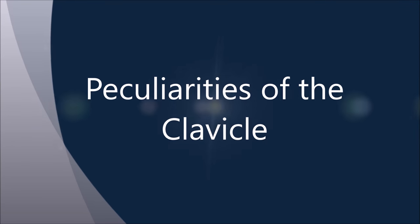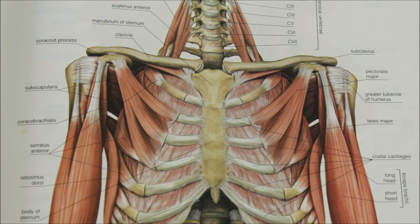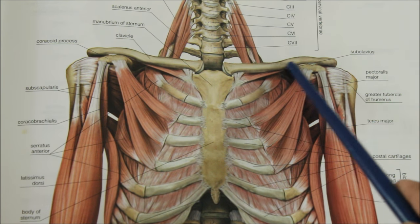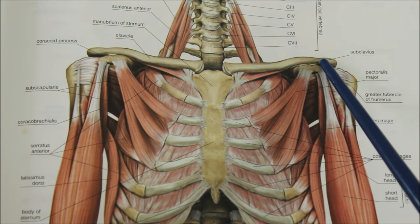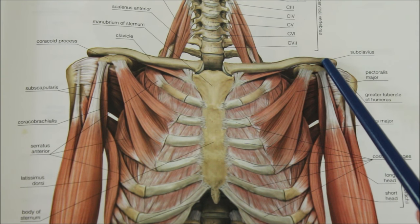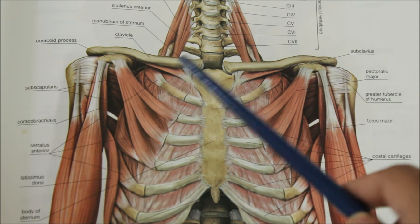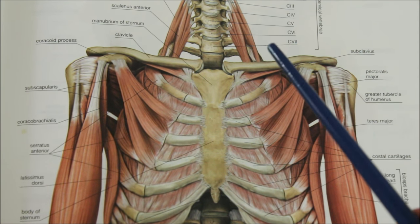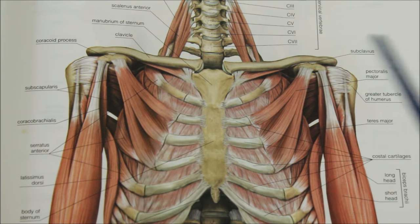Hello friends, today we're going to learn about the clavicle. Let us look at some of the peculiarities of the clavicle. It is the only long bone that lies horizontally in the body. It is subcutaneous throughout, which means it is situated under the skin and can be felt.